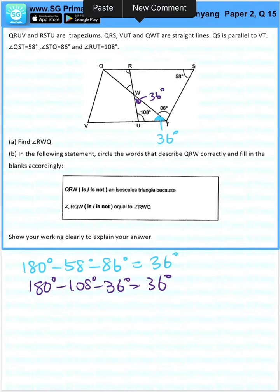Now RWQ is 36 also because they are vertically opposite angles.